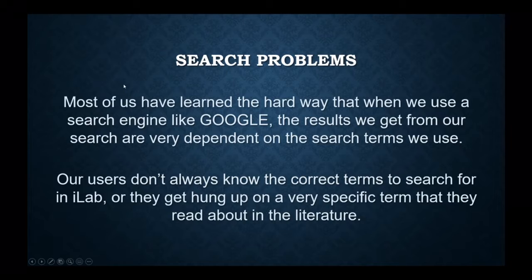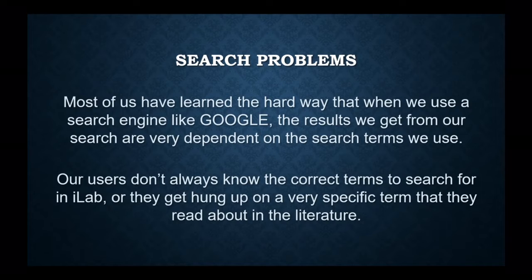Most of us know that when we've worked with search engines like Google or Bing, the results we get are very dependent on the specific search terms we use. The better we use the search terms, the more specific answers we get. Unfortunately, our users don't always know the correct terms to search for things in iLab, or they get hung up on a very specific term they've read about, or they may not know that an instrument can perform a certain technique because they haven't associated the type of instrument with the technique.